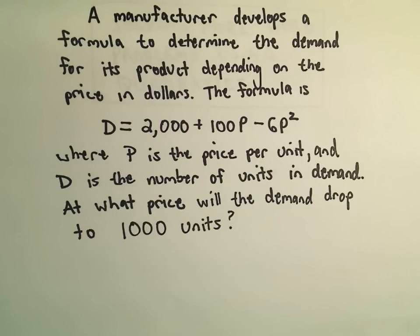P is the price per unit and D is the number of units in demand. And we want to know what would the price need to be so that the demand will become 1,000 units.